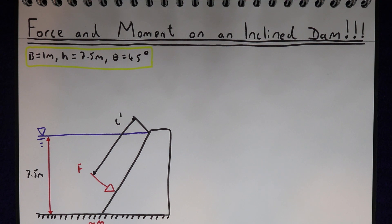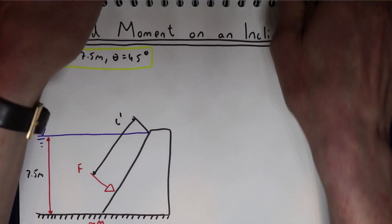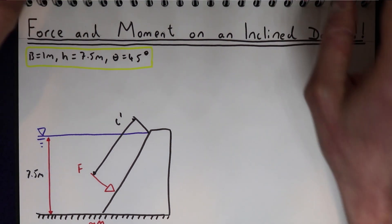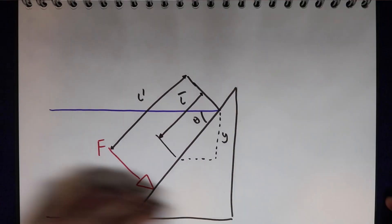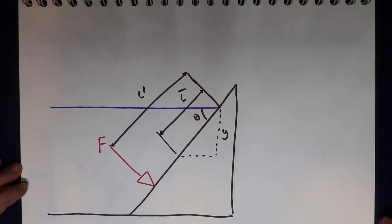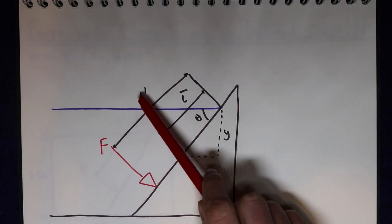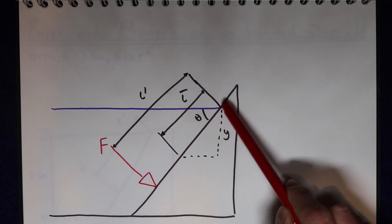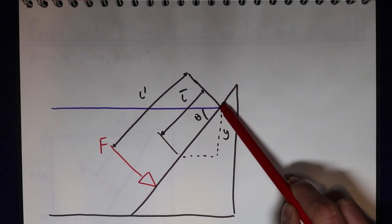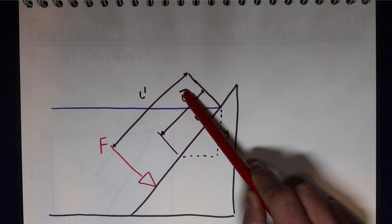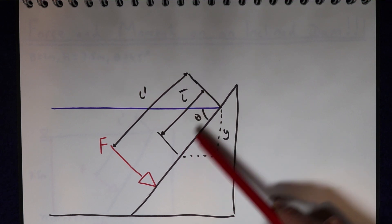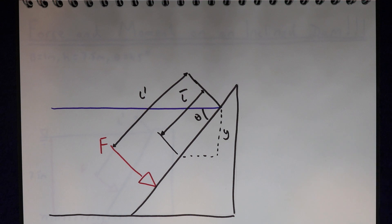Before we solve this problem it's worth quickly thinking about what difference it makes when the dam is inclined. What we have is a dam at an angle theta to the horizontal. We have a force acting at some distance L' from the water surface, and the centroid L̄ is halfway down the dam from the surface of the water.